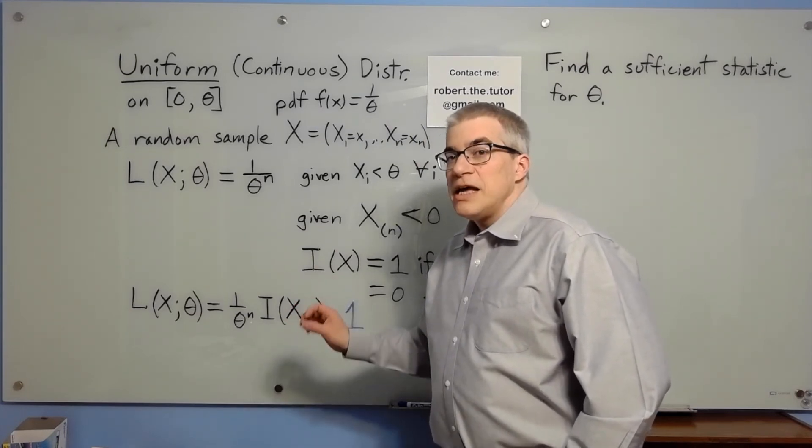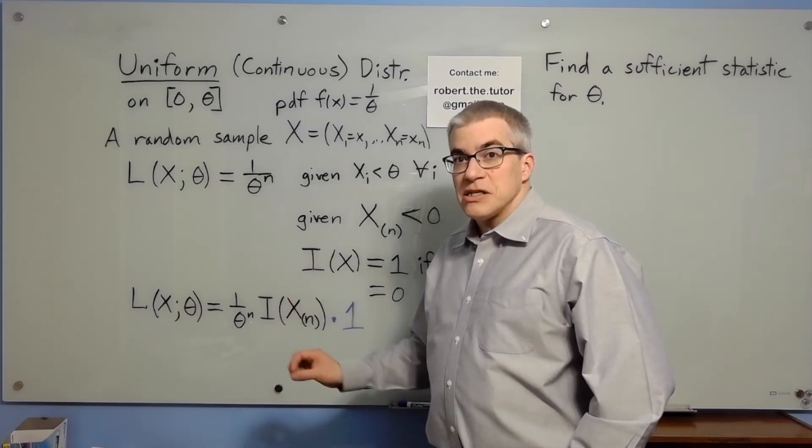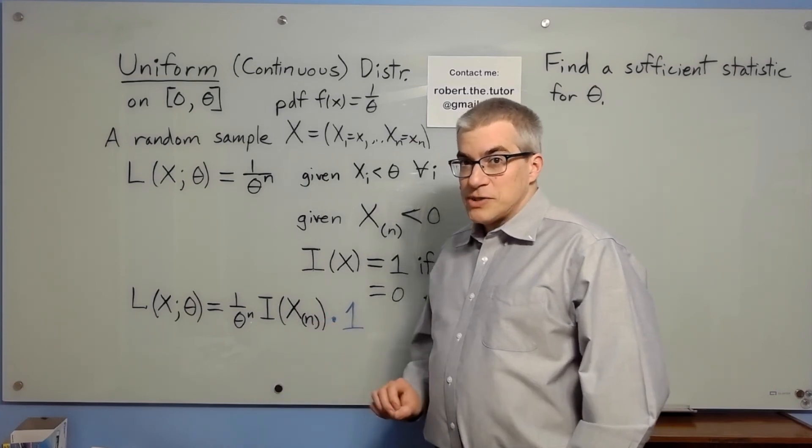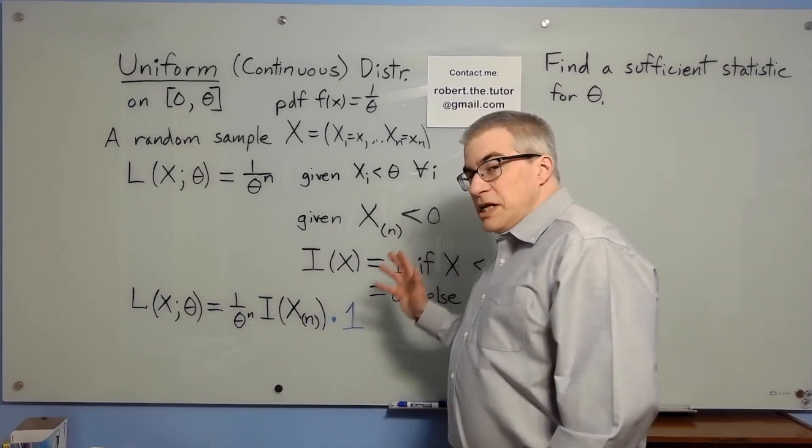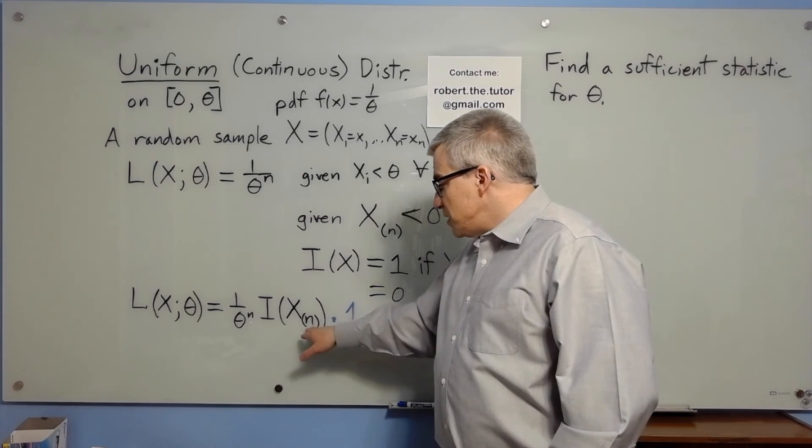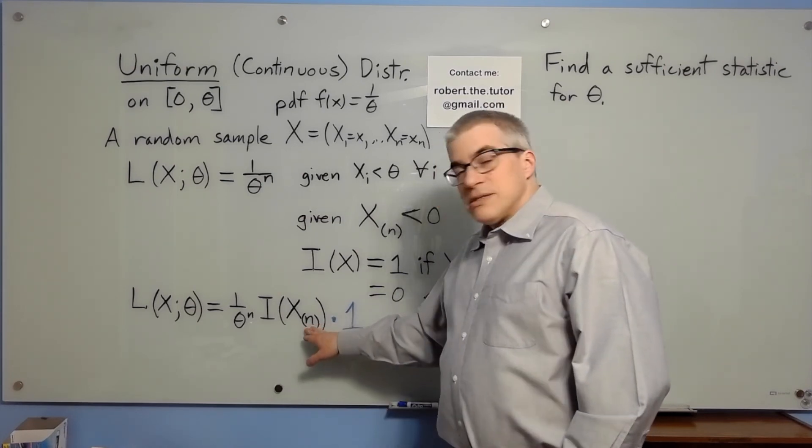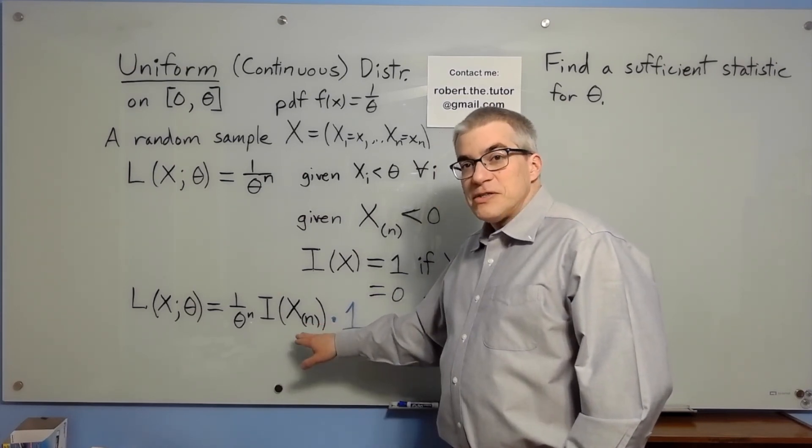And the condition for sufficiency is that the x's only show up in this expression in the form of the statistic. If that is true, then the statistic is sufficient. That's what the factorization theorem says. We don't need all of the data, we only need to know the maximum. And so the maximum is the sufficient statistic.